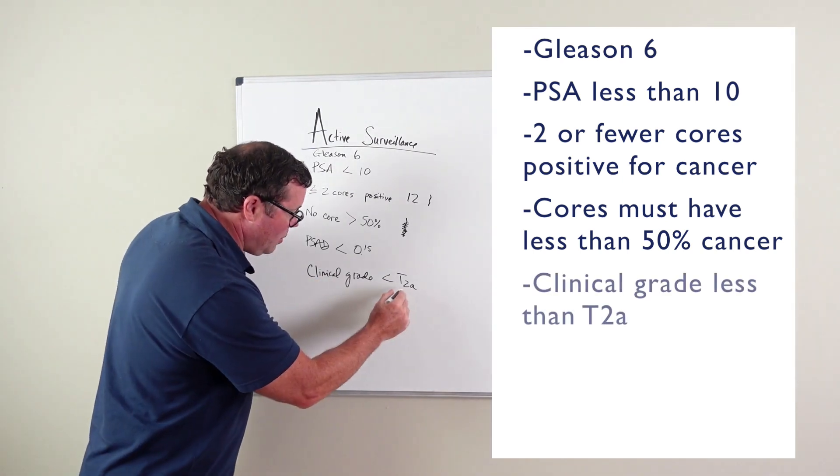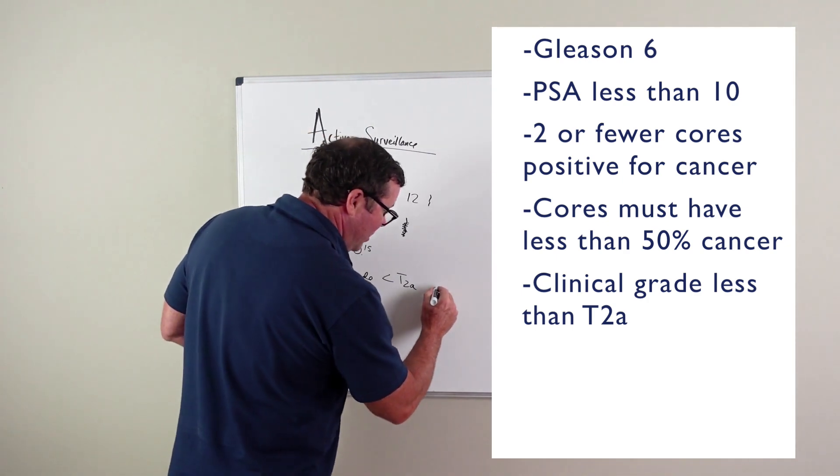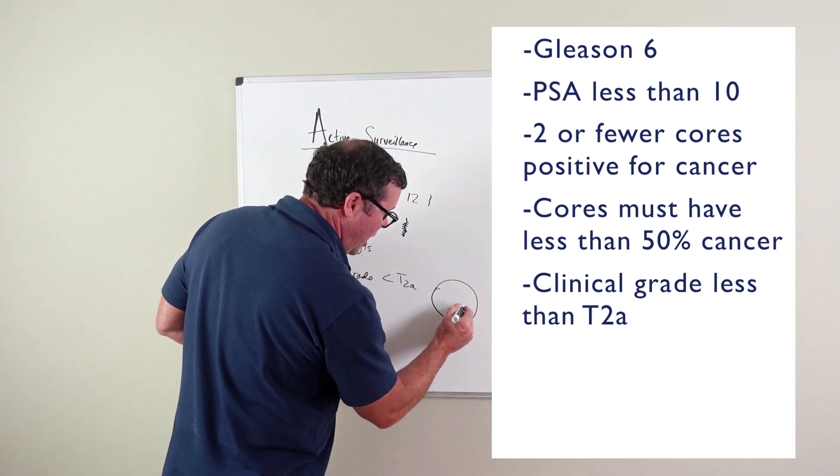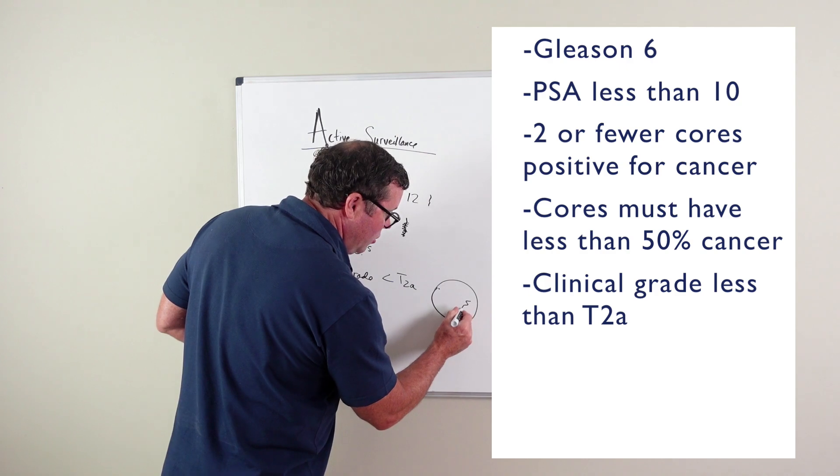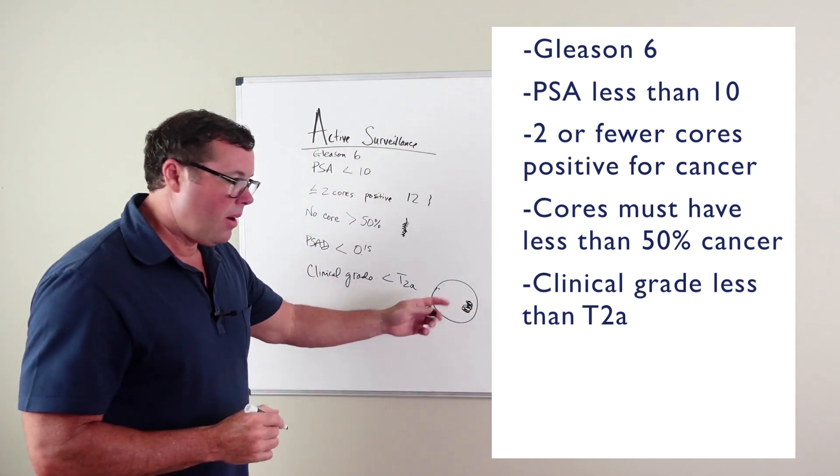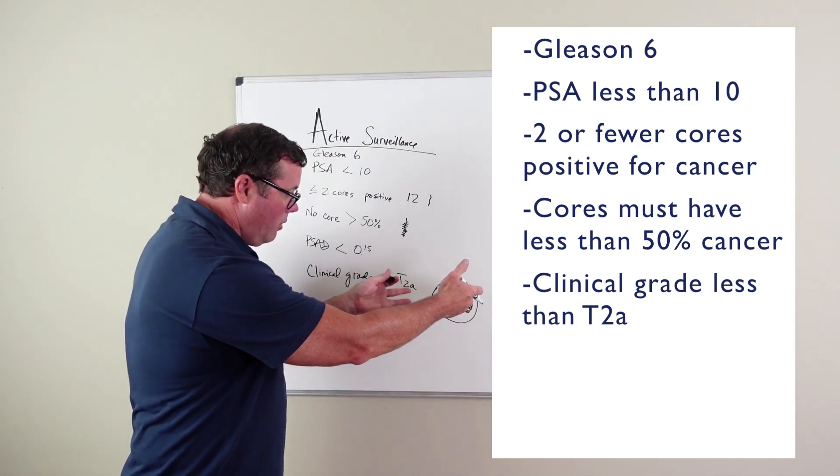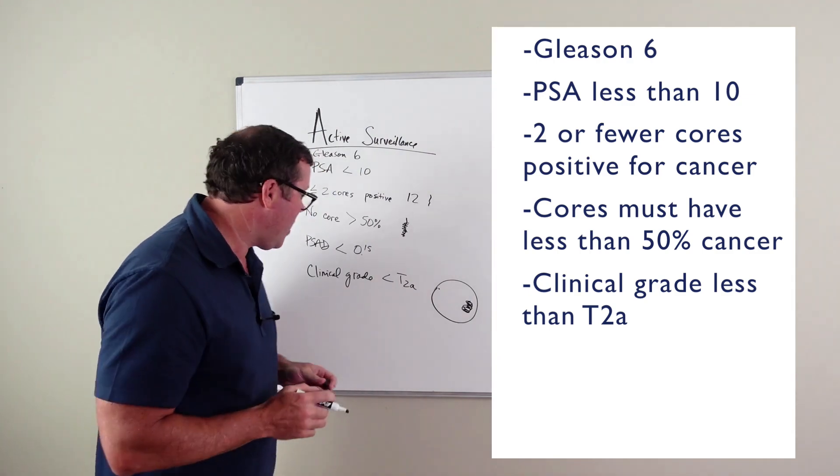You also would like clinical grade less than T2A. You want to be dealing with a prostate cancer that is usually less than half of one side of the prostate, that's localized to the prostate and simply growing just within that prostate.